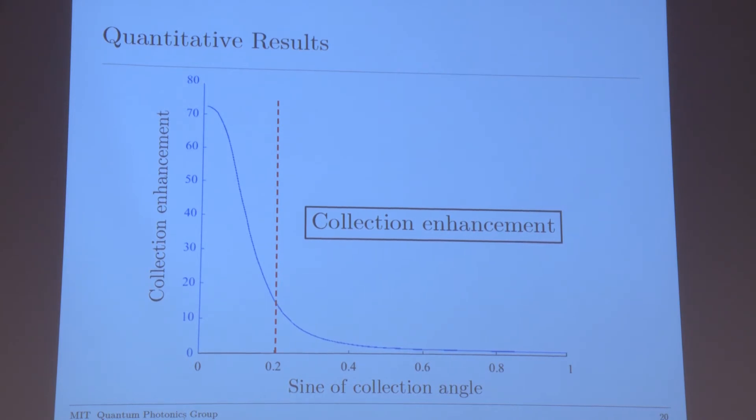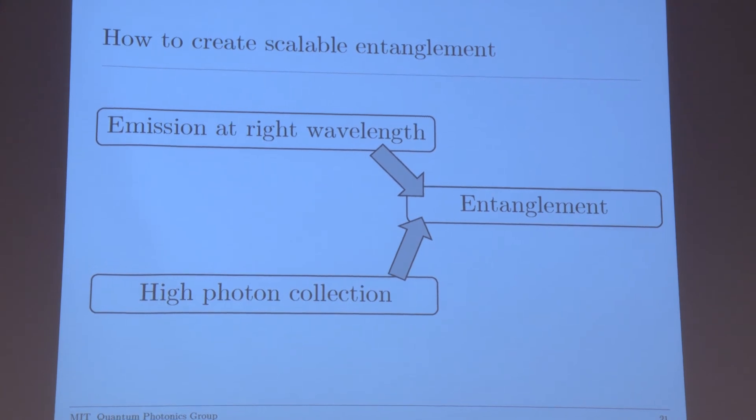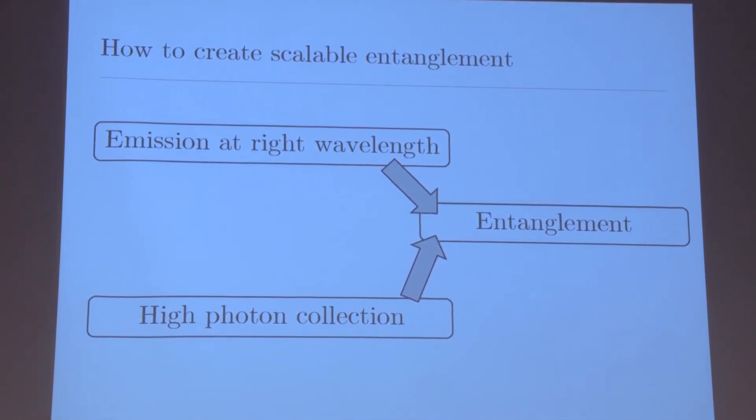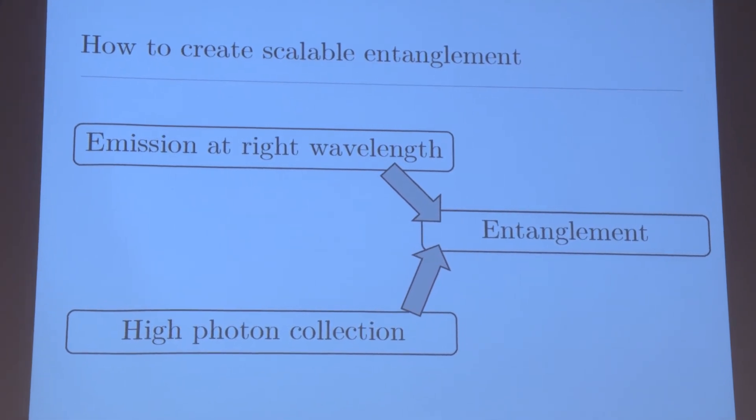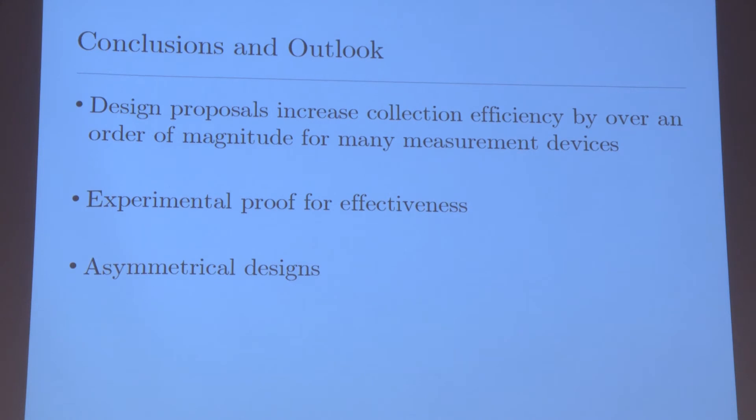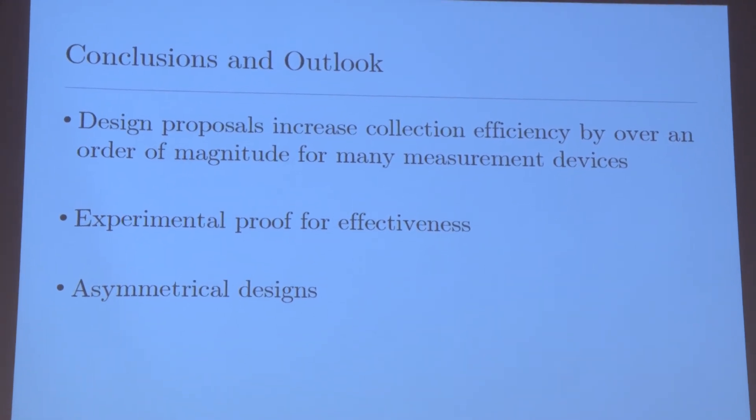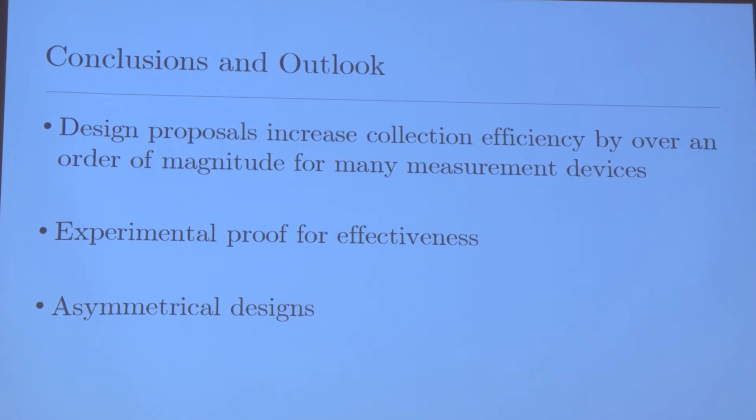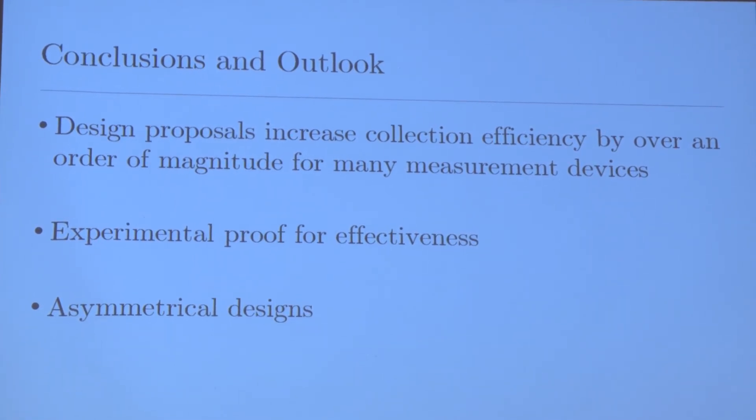In this way, we have now fixed both problems for entanglement. We have emission at the right wavelength due to the cavity, and we also have high collection efficiency due to the perturbations that we added. So, in conclusion, we've designed two proposed designs to increase collection efficiency. One device in particular increases collection efficiency by over an order of magnitude for several measurement devices.